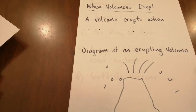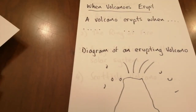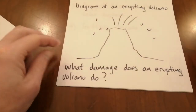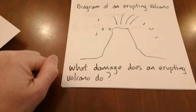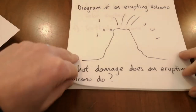My next section is called 'When Volcanoes Erupt.' I've written here 'a volcano erupts when' and then you would have maybe two or three sentences — that's all I would look for, telling the reader what happens when a volcano erupts. A diagram of an erupting volcano would be awesome. You might even want to include what damage an erupting volcano does. In the slides I've added earlier on, there's lots of information about what happens after a volcano erupts — sometimes it's good, but usually it's bad.